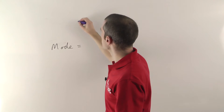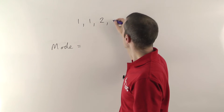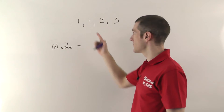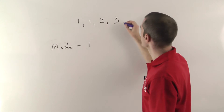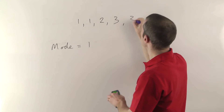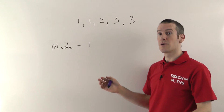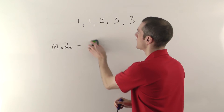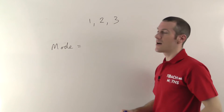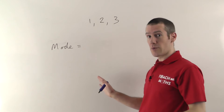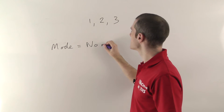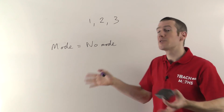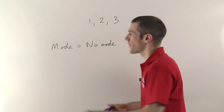To practice: if you have two ones, a two and a three, the mode is one. If you then have two ones, two twos and a three, the mode is one and three — they tie. And if all numbers occur once, there is no number that occurs more than any other, so there is no mode. Those are the special cases for the mode.